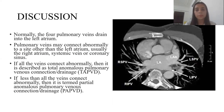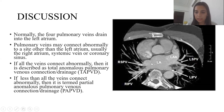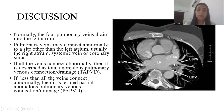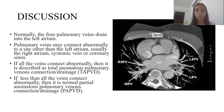This is followed by a brief discussion on this topic. Normally, the four pulmonary veins drain into the left atrium as we can see in this image. Pulmonary veins may connect abnormally to a site other than the left atrium — usually the right atrium, systemic vein, or coronary sinus. If all the veins connect abnormally, then it is described as total anomalous pulmonary venous connection. If less than all the veins connect abnormally, then it is termed partial anomalous pulmonary venous connection.